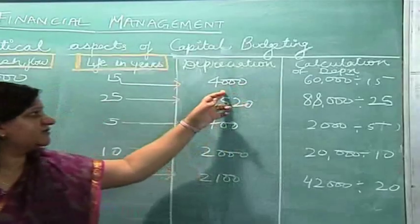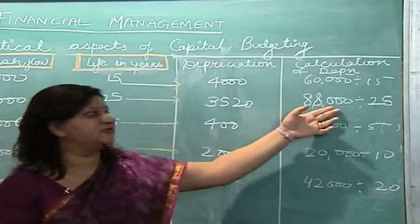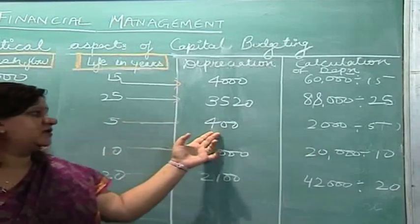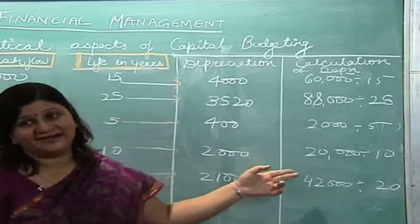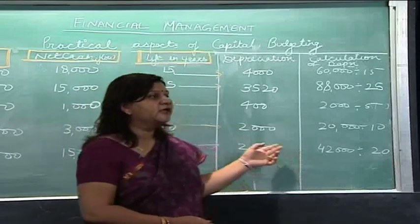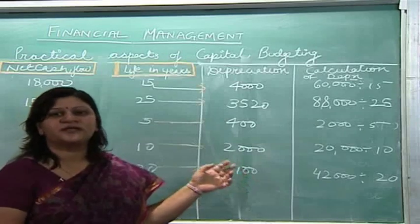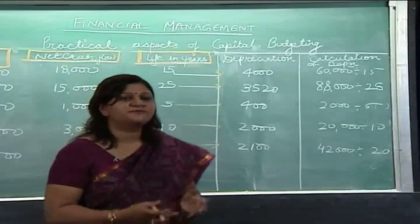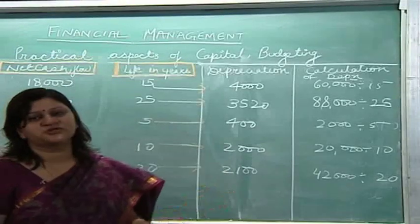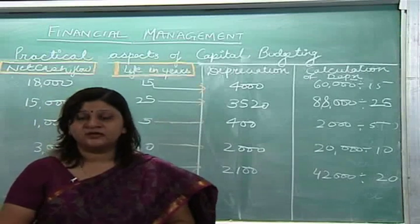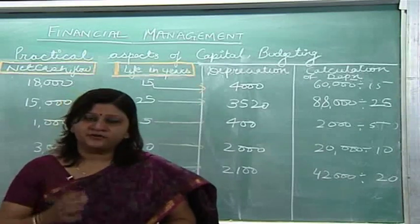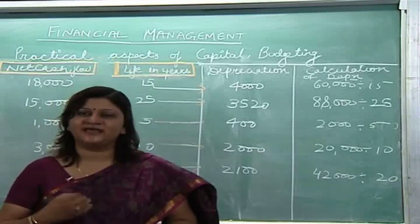Now we subtract this depreciation from the net cash inflow to find the annual accounting income. For proposal A: 18,000 − 4,000 = 14,000. For proposal B: 15,000 − 3,520 = 11,480. For proposal C: 1,000 − 400 = 600. The other figures, including 12,900 for proposal D, have been computed by subtracting the respective depreciation from the inflows. Under ARR, our calculation is based on accounting income rather than cash flows.